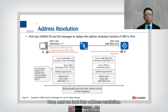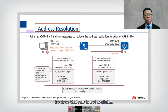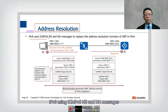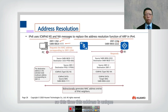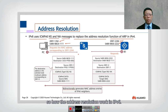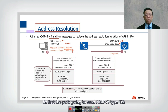Now let's look into address resolution. In IPv6 there is no ARP, but we still need to map Layer 3 addresses to Layer 2. IPv6 uses ICMPv6 NS (type 135) and NA (type 136) messages to replace the address resolution function of ARP in IPv4. In this example, PC has IPv6 address 2001::1/64 and the router has 2001::2/64. These addresses are unique — no conflict. The PC wants to find the MAC address of 2001::2.